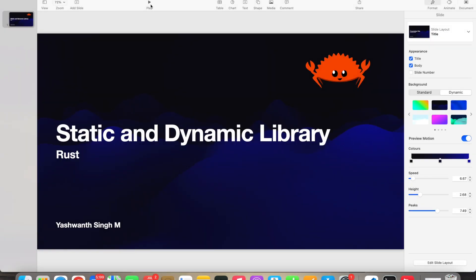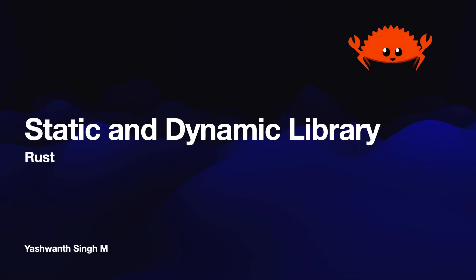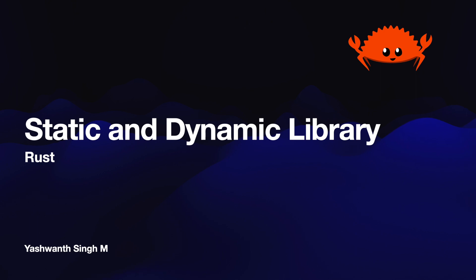We're going to see a demonstration of what exactly static and dynamic libraries mean. In common terms, a static library is something you link at compile time, and a dynamic library is something you link at runtime.